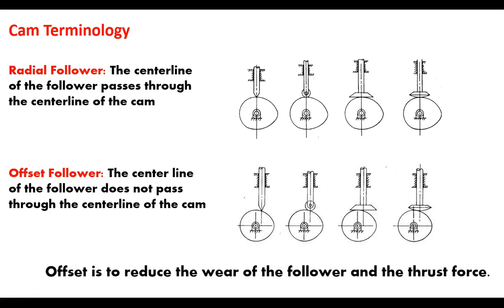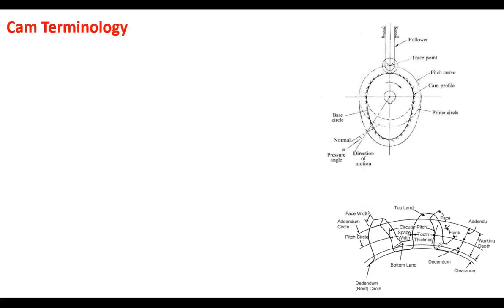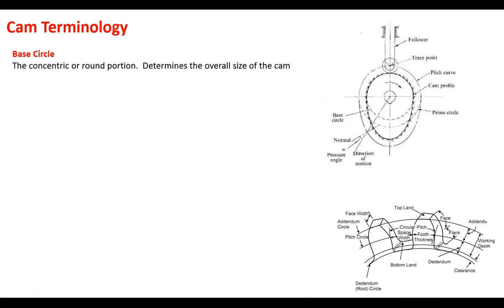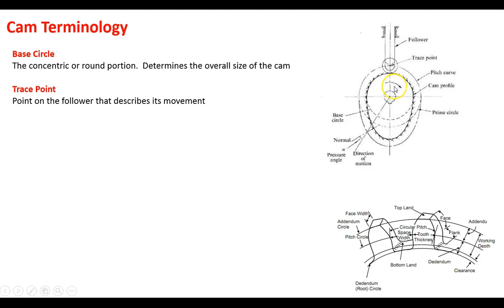One benefit of the offset follower is that it reduces the wear of the follower as well as the thrust force — that's one reason someone would want an offset follower. Now for some basic terminologies: you've got the base circle, which is the round portion and the theoretical circle that the cam is rotating about — that determines the overall size of the cam. Then there's the trace point, which is the center of the follower as it travels around the cam.